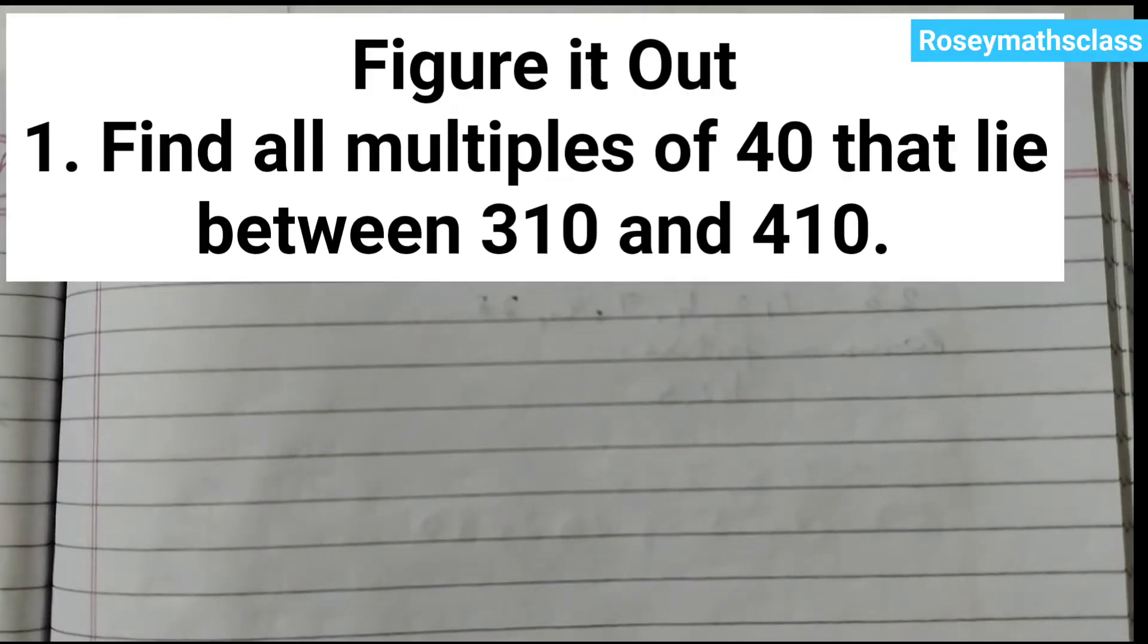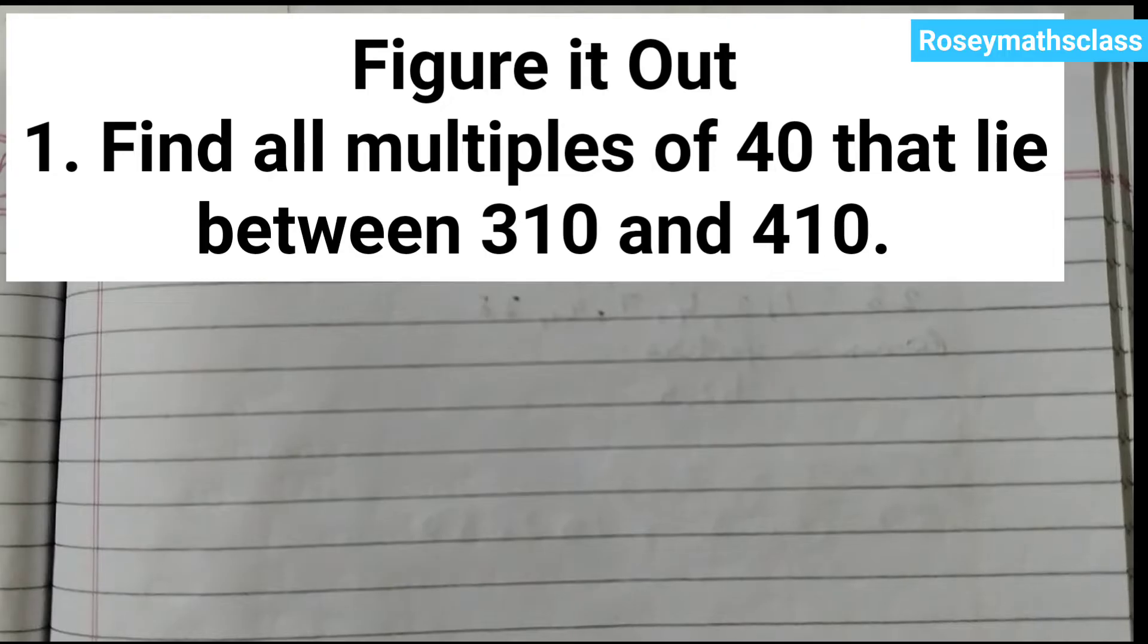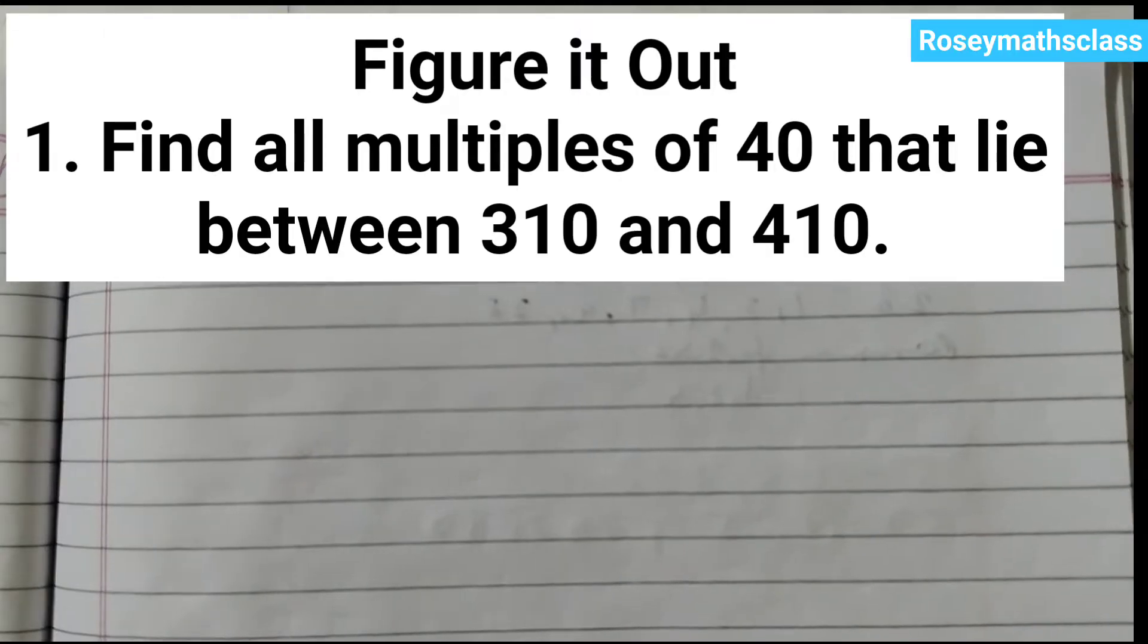Hello students, chapter 5 prime time. The first question given is: find all multiples of 40 that lie between 310 and 410.